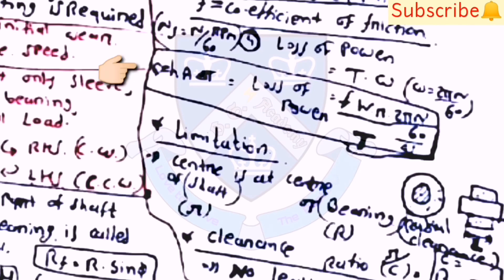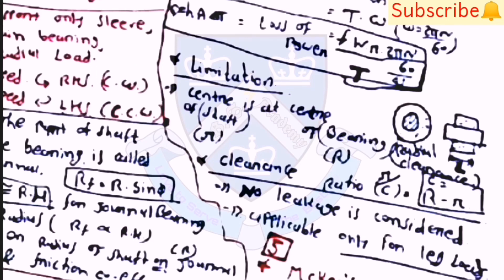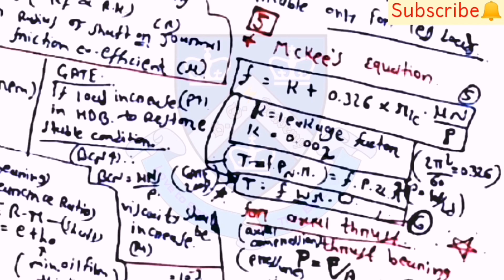Q = h_a·delta_t. From these two equations, many questions were asked. Limitation for hydrostatic bearing: center of shaft is at center of bearing, so c = R − r — no leakage is considered, applicable only for light loads. McKee's equation: f = K + 0.326·(R/c)·(mu·N/p), where K = leakage factor with value K = 0.002. T = f·p·n·r and T = f·W·r·omega. T = f·p·n·r² (alternative form).